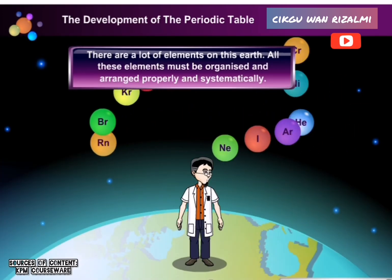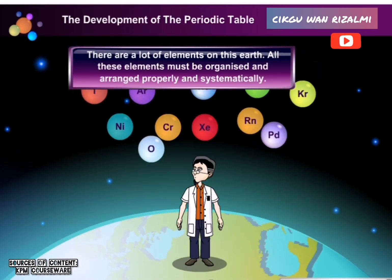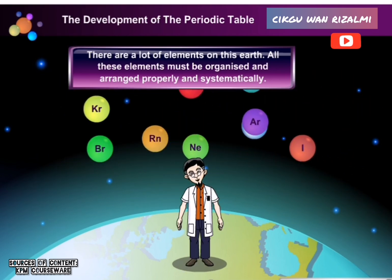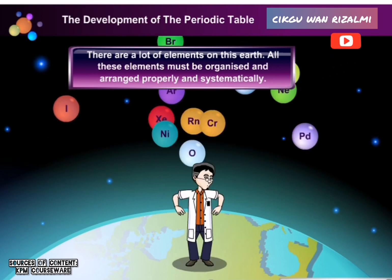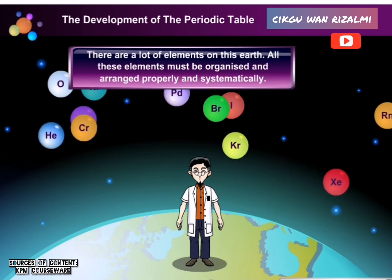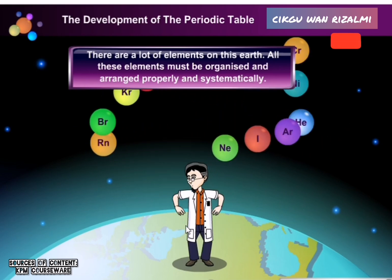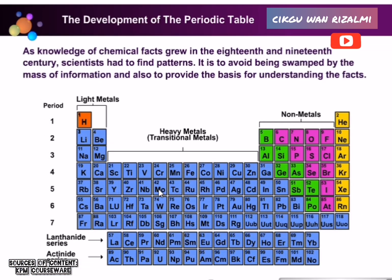Our earth has lots of different elements such as oxygen, hydrogen, chlorine and many more. There were many attempts to arrange these elements into a proper table. How can we arrange all these elements? Do you know when the Periodic Table was developed and when the history of the Periodic Table began?